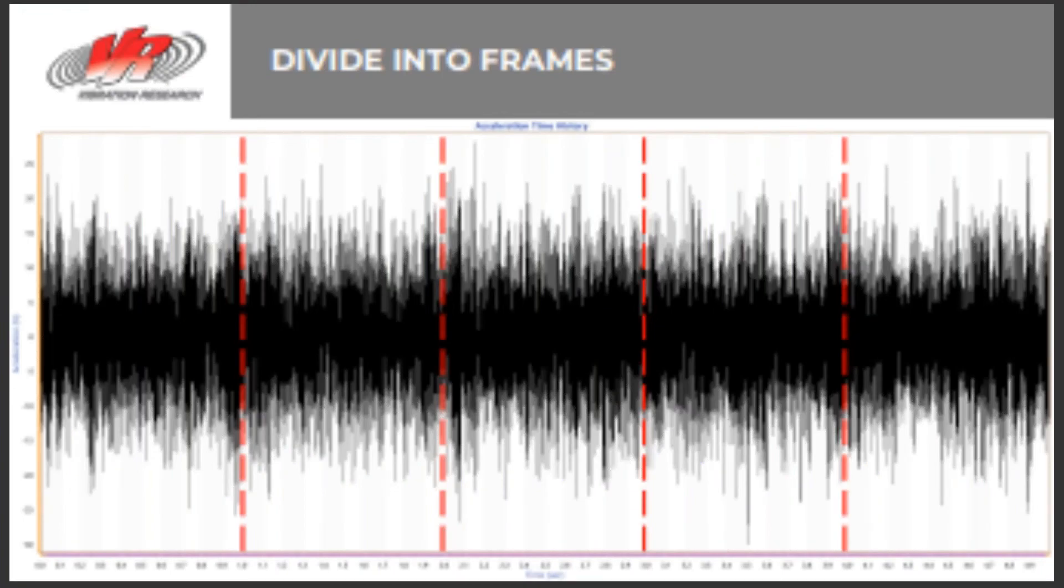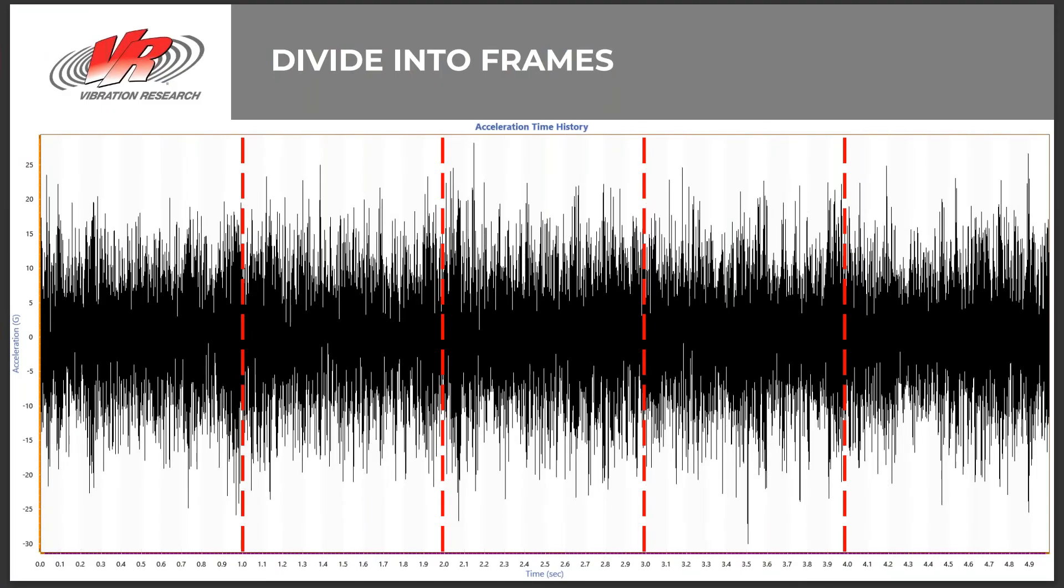The first step to generating a PSD is to generate a series of FFTs. In order to do this, the data must be divided into frames. Each individual frame will result in a single FFT. The average series of FFTs will result in a PSD. Lines of resolution and sample rate determine width of each frame. There are two samples per analysis line. In this case, the recorded time history was sampled at 8,192 hertz, and the lines are set to 4,096, resulting in a frame width of one second. If the analysis lines were changed to 1,024, the frame width would be 0.25 seconds.